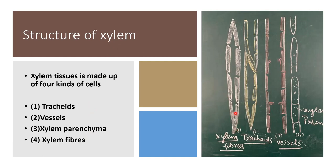These are the fibers which are elongated and highly thickened. These are tracheids which are placed one upon each other, and vessels are again placed one upon each other. The fourth kind of cells are parenchymatous cells — xylem parenchyma.